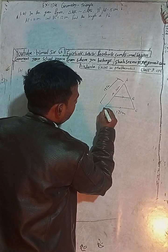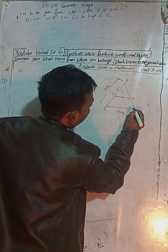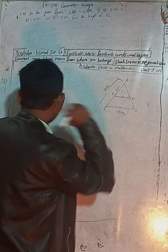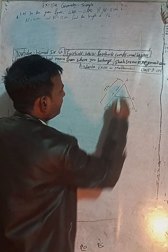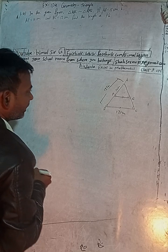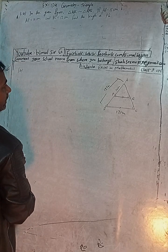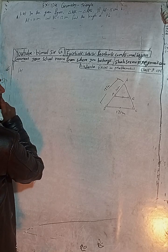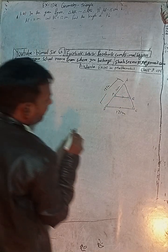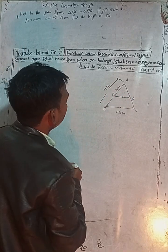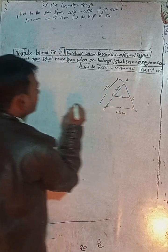PQ is parallel to BC. That means this angle is equal to this angle, and this angle is equal to this angle — corresponding angles because these lines are parallel. And this is the common angle. So we can now write the proportion.